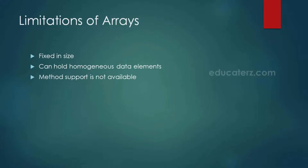When we come across collections, we need to know the limitations of arrays. A collection, as the name itself indicates, is nothing but a group of elements. A group of elements is nothing but an array, which we already know in core Java. So when we already have arrays, why should we go for collections?